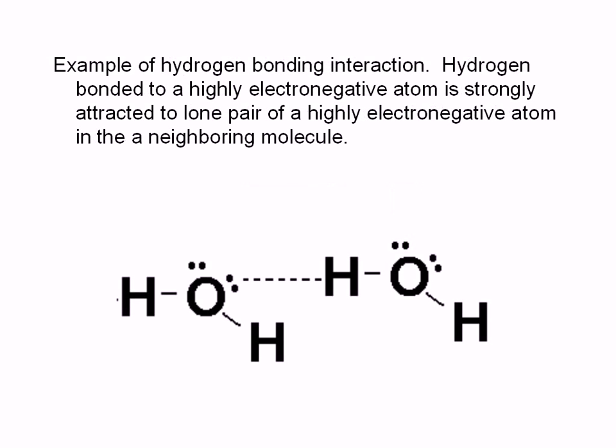Here is an example of hydrogen bonding interaction between two molecules. Hydrogen bonding occurs when one molecule has a hydrogen atom that is bonded to a highly electronegative atom. In the example shown here, this hydrogen atom is bonded to an oxygen.